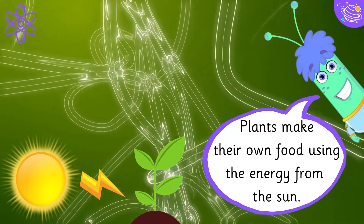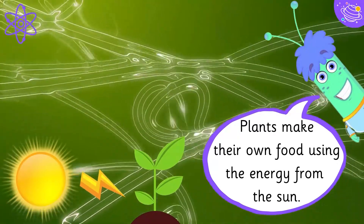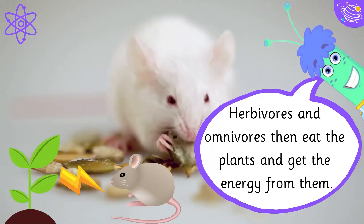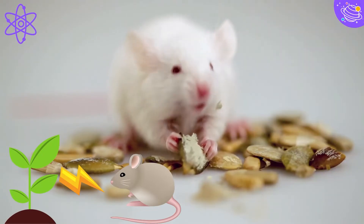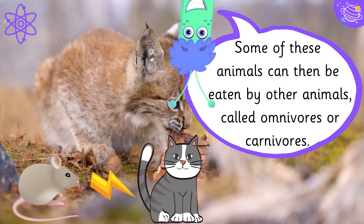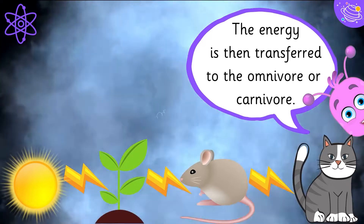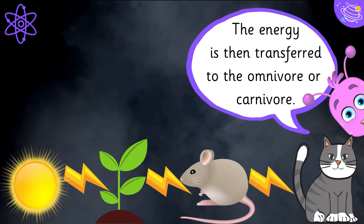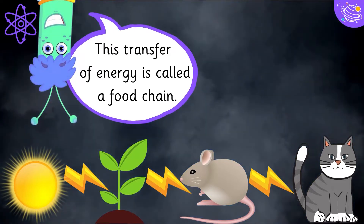Plants make their own food using the energy from the sun. Herbivores and omnivores then eat the plants and get the energy from them. Some of these animals can then be eaten by other animals called omnivores or carnivores. The energy is then transferred to the omnivore or carnivore. This transfer of energy is called a food chain.